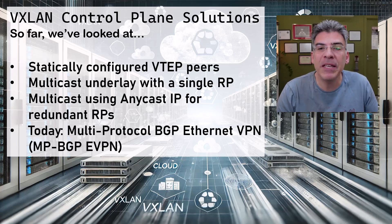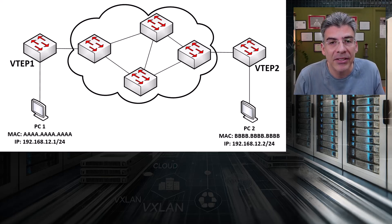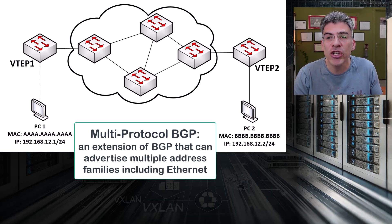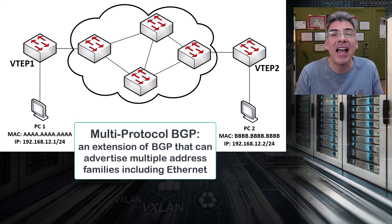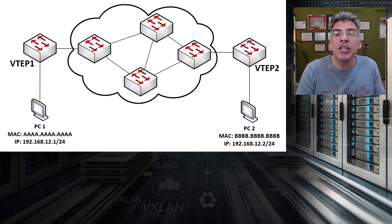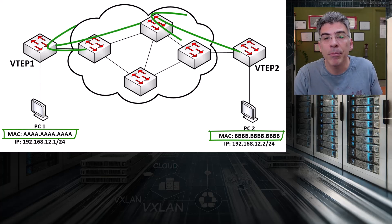How does this MPBGP EVPN solution operate differently than previous solutions? What we're actually going to create here is a topology that will dynamically share MAC addresses of hosts connected to VTEPs that belong to particular VNIs. And it is the BGP protocol that will be used to advertise and share those MAC addresses. That's why we're using multi-protocol BGP, which is essentially an extension of BGP that can advertise various types of address families. In this case, we're not advertising IPv4 or IPv6 address families, but we're advertising the layer 2 EVPN address family — in other words, MAC addresses.